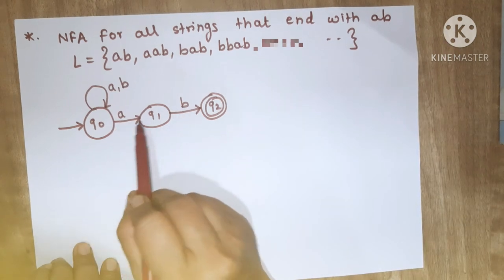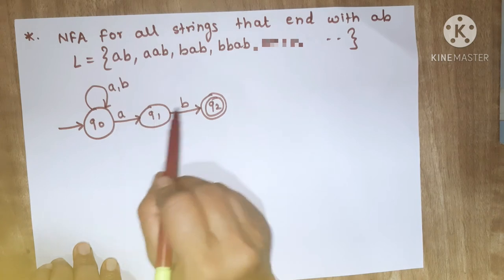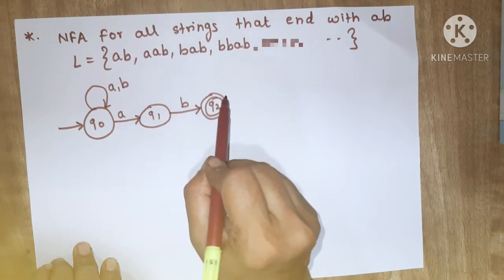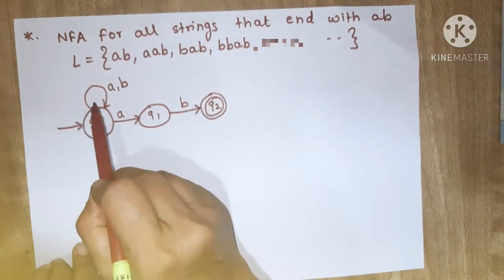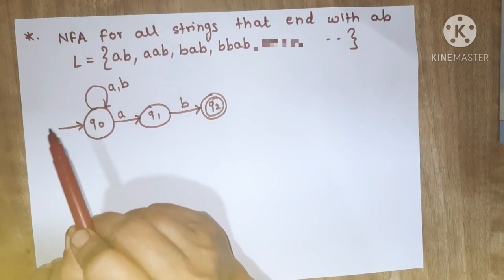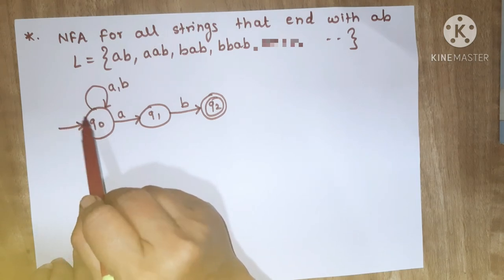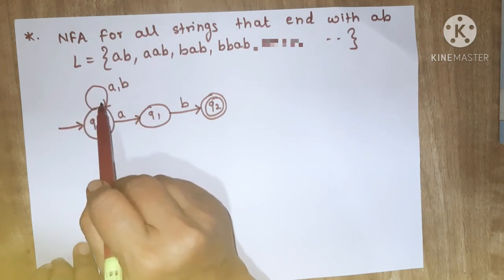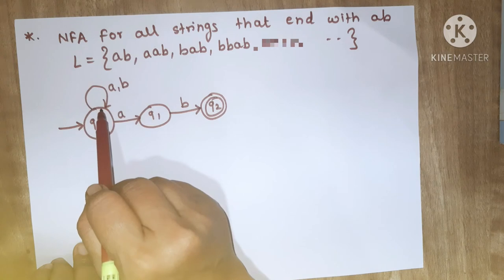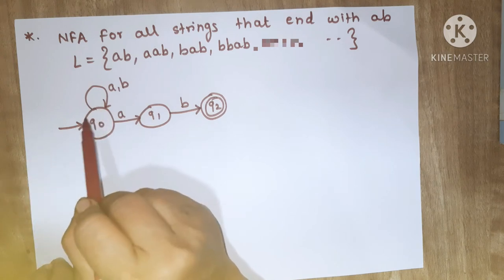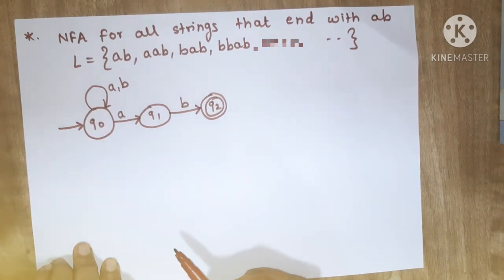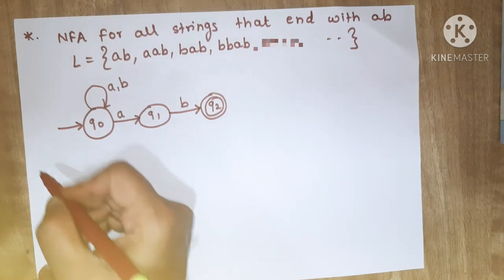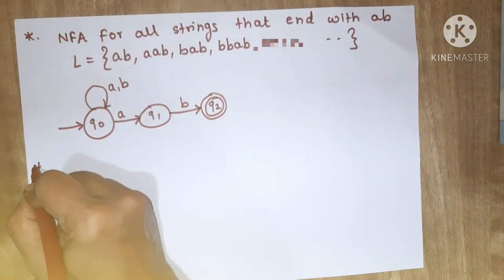In this NFA for all strings that end with AB, the required restriction is that every string should end with AB, and that's why we show the transition AB going to the final state. We do not show all other transitions from the final state, and the self-loop on Q0 handles any combination of A and B before that AB.